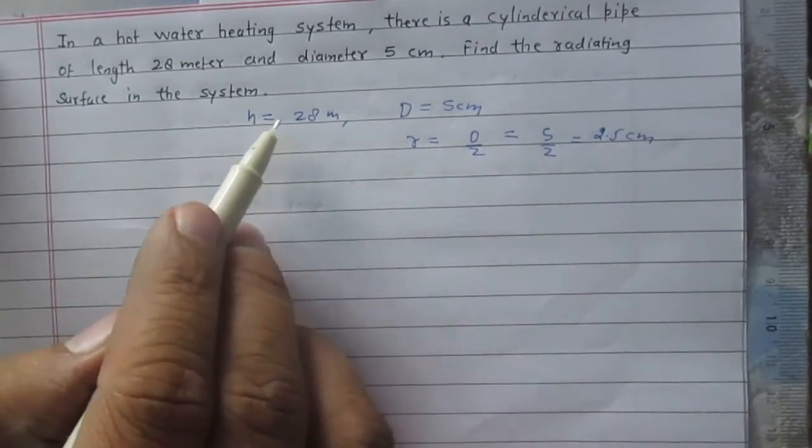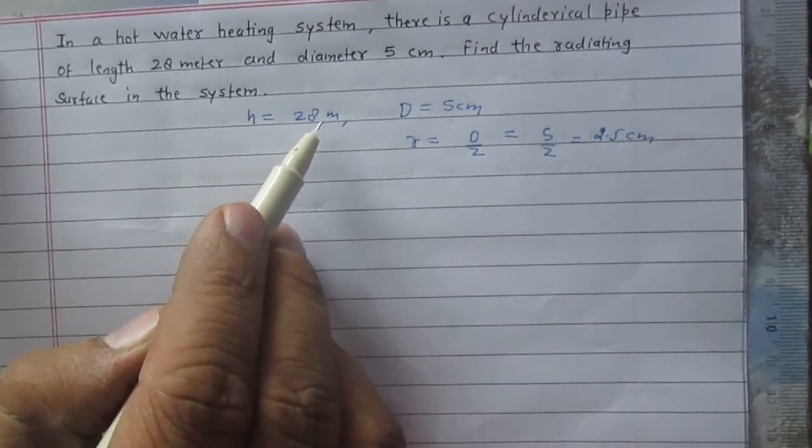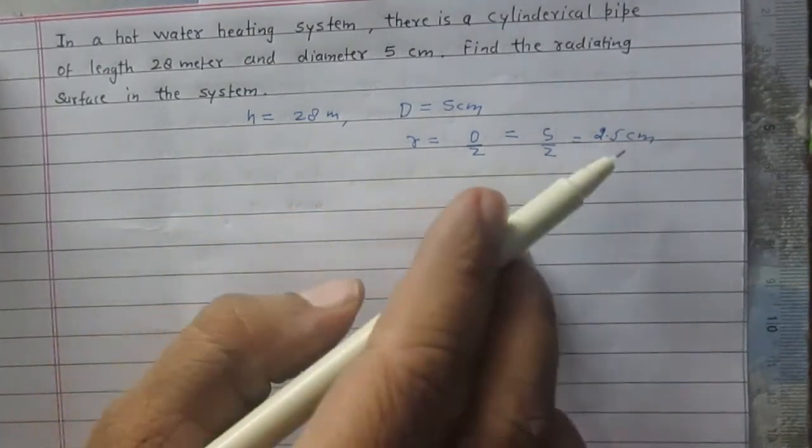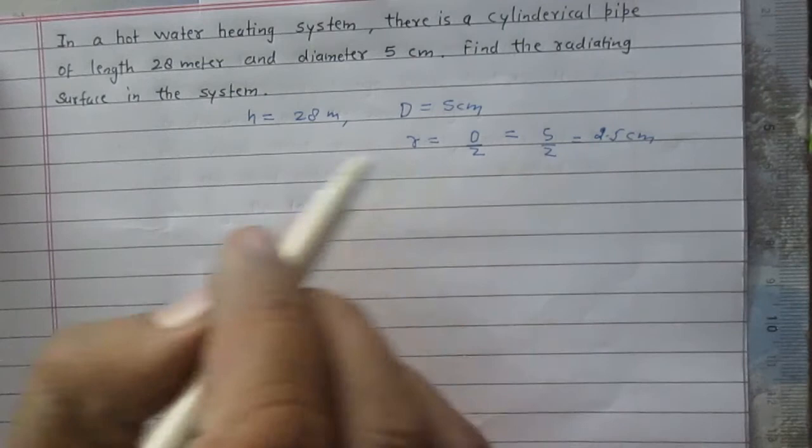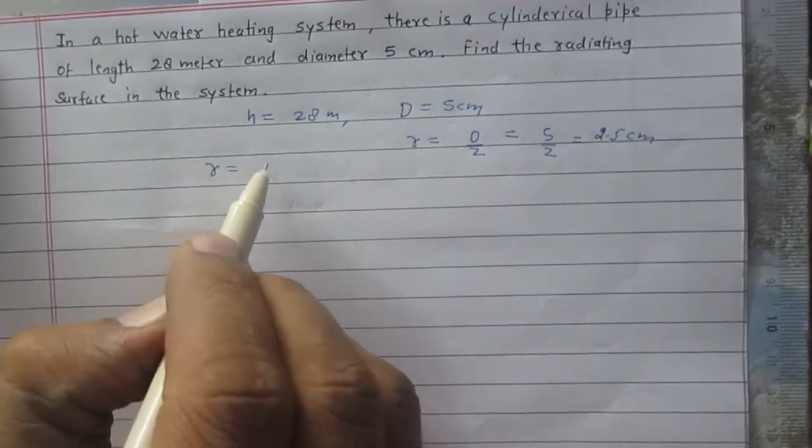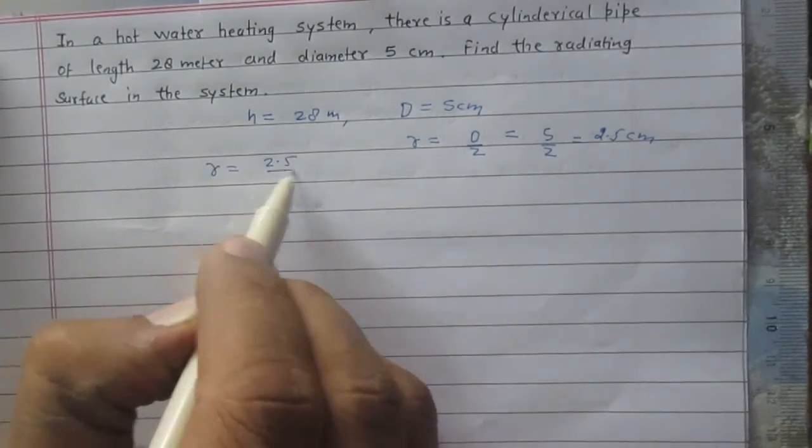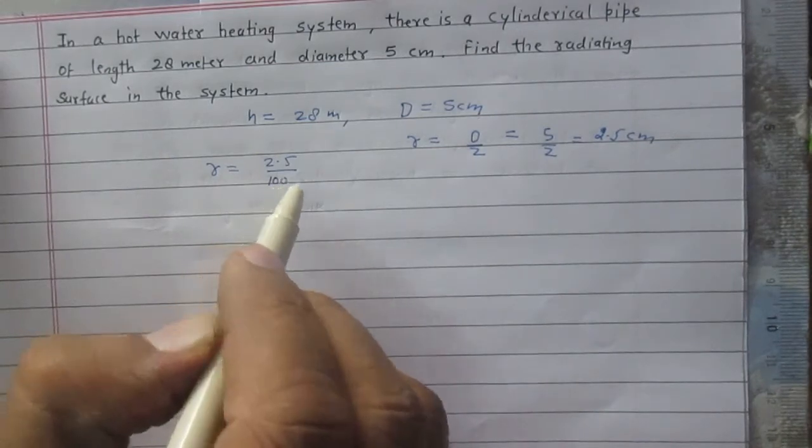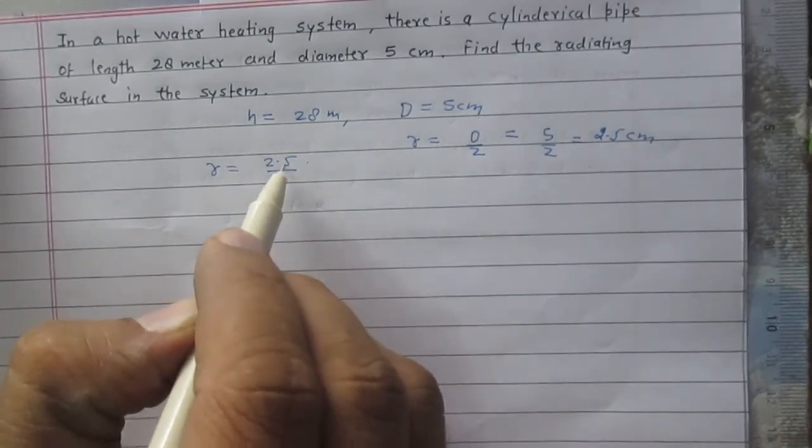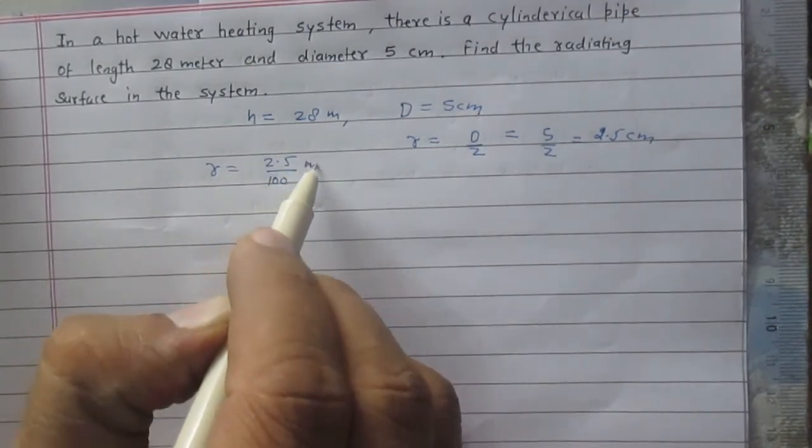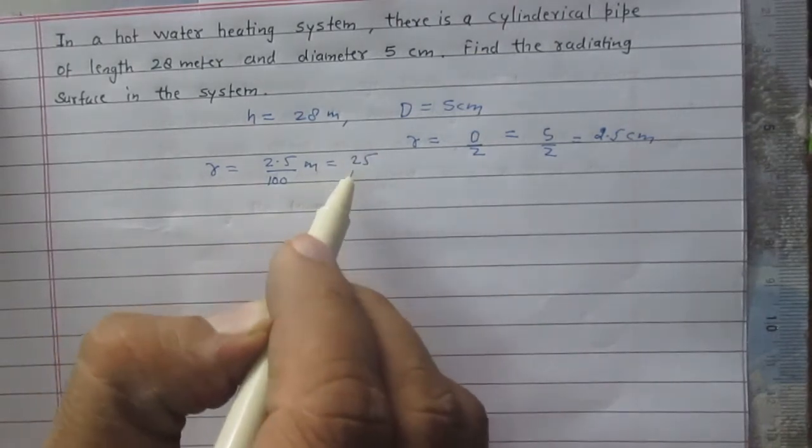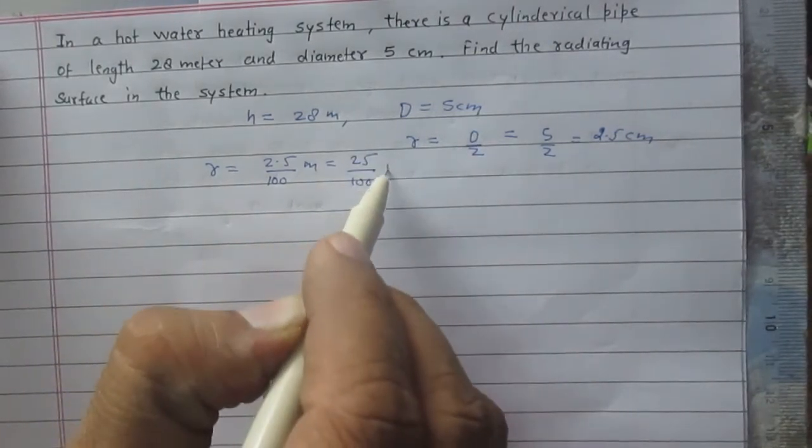Here the height is 28 meter and unit of the radius is centimeter. So we can convert the radius into meter by dividing it with 100. We will get 2.5 upon 100 meter, or you can write 25 upon 1000 meter.